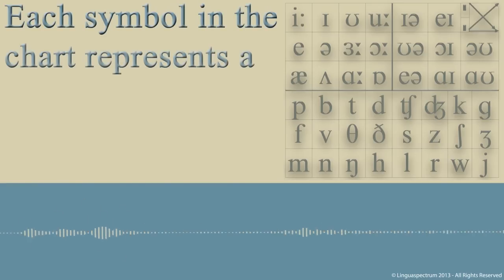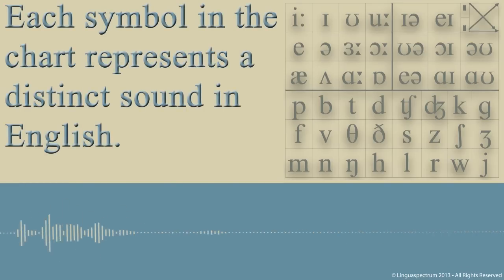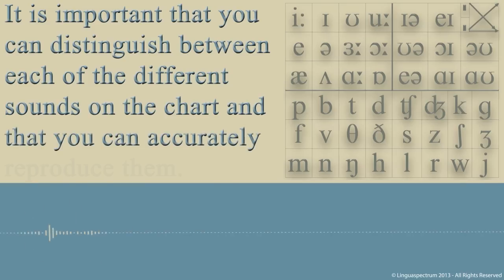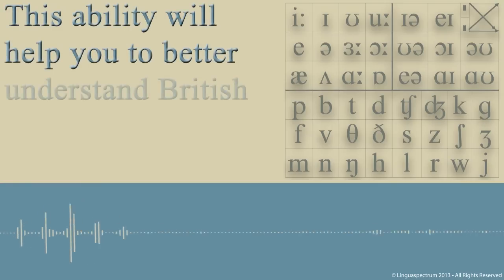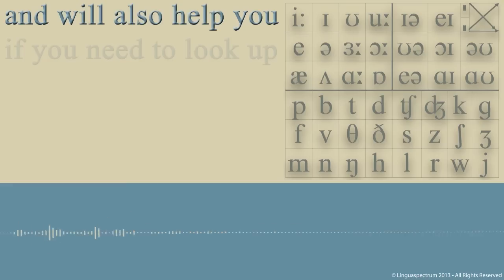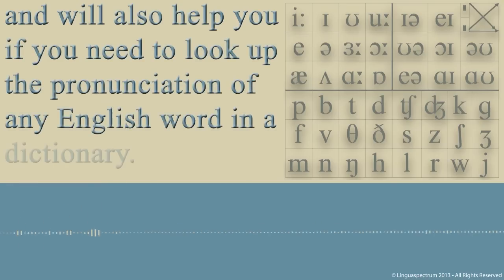Each symbol in the chart represents a distinct sound in English. It's important that you can distinguish between each of the different sounds on the chart and that you can accurately reproduce them. This ability will help you to better understand British English pronunciation and will also help you if you need to look up the pronunciation of any English word in a dictionary.